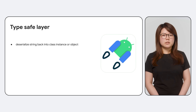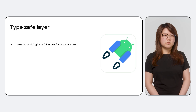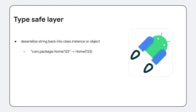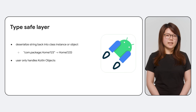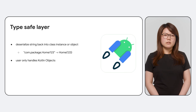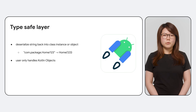And when we want to retrieve the arguments from the URL, we deserialize the string back into the original class instance or object. For example, with the serialized string from earlier, internally navigation deserializes it back into the home class instance for you. As a library user, you will only ever have to interact with Kotlin objects, which inherently ensures type safety.